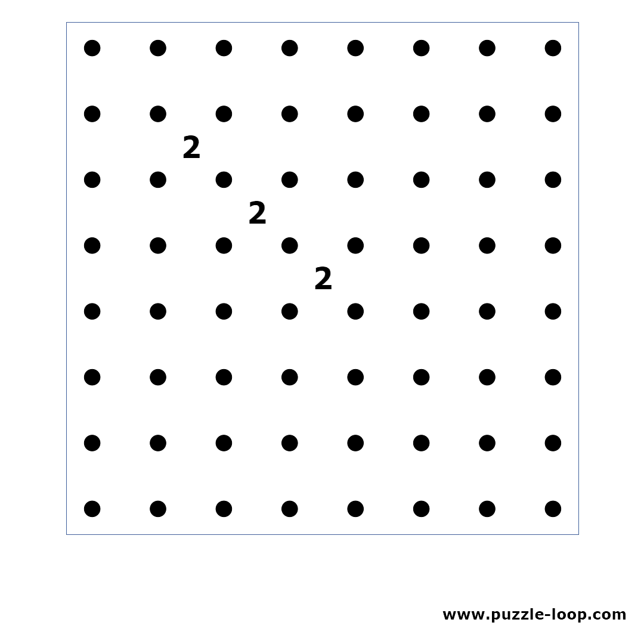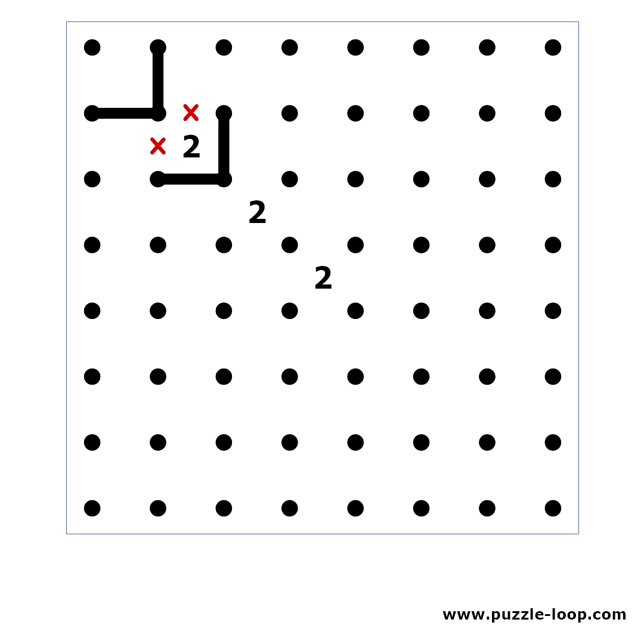Patterns with 2s. The most common pattern with 2s is when we have a corner segment pointing towards a 2 like this. This creates a chain reaction for as many 2s as we have on that diagonal.